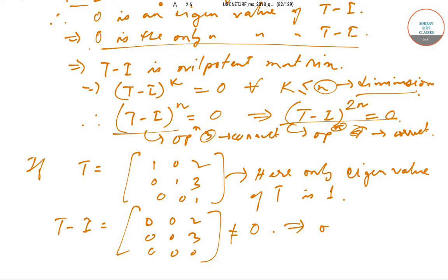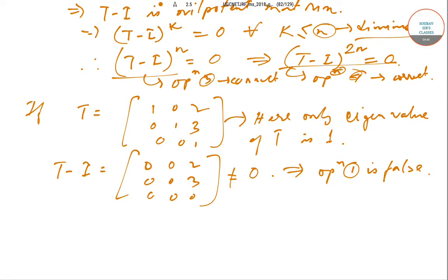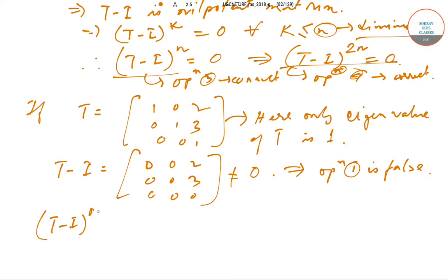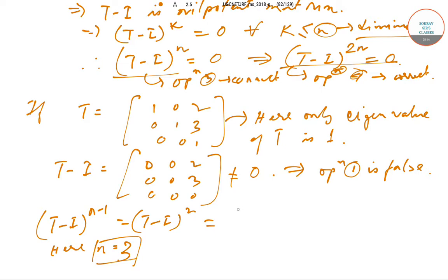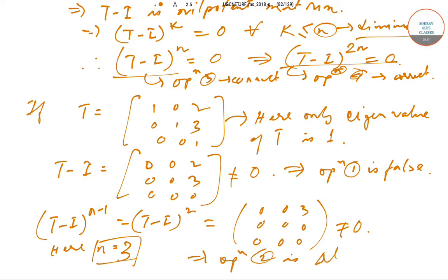Therefore option 1 is false. Now let us find (T minus I)^(n-1). Here the dimension n equals 3, so we compute (T minus I)^2, which gives the matrix [0, 0, 3; 0, 0, 0; 0, 0, 0], which is not the null matrix. So option 2 is also false.